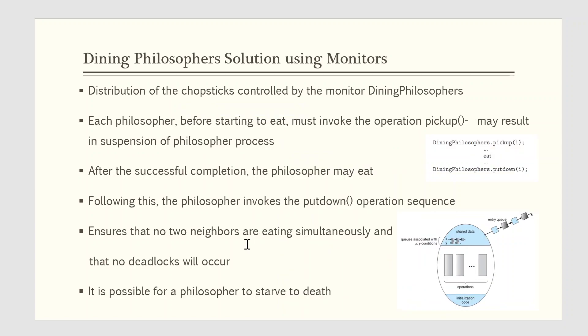It is easy to show that this solution ensures that no two neighbors are eating simultaneously and no deadlocks will occur. We note, however, that it is possible for a philosopher to starve to death. This is the diagram of a monitor with condition variables in it, x and y.